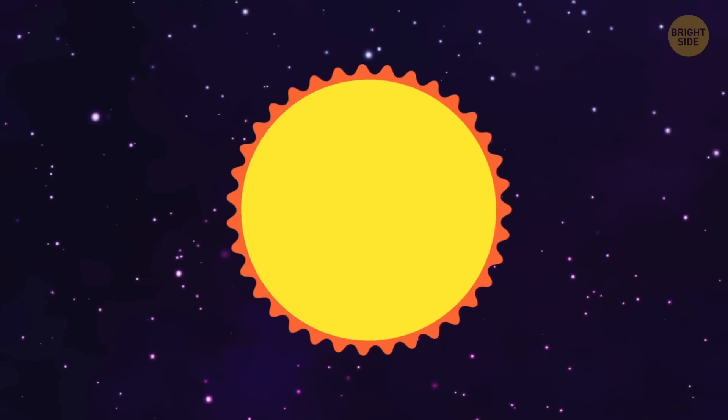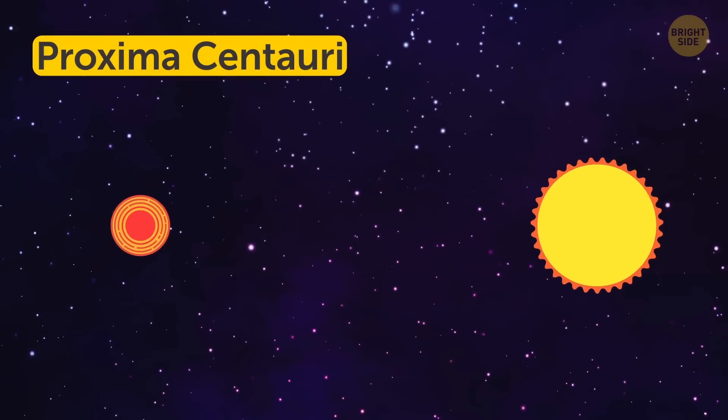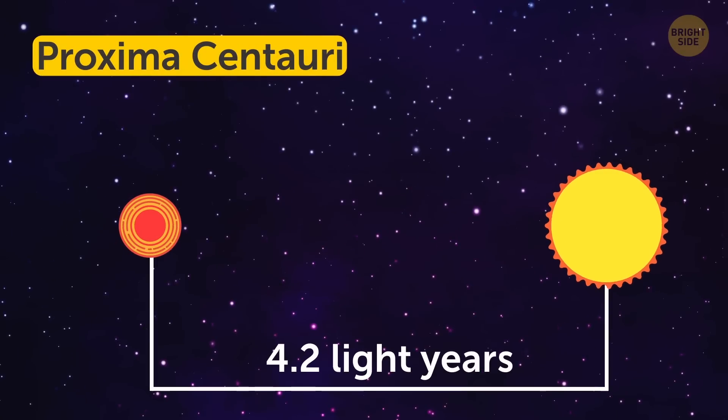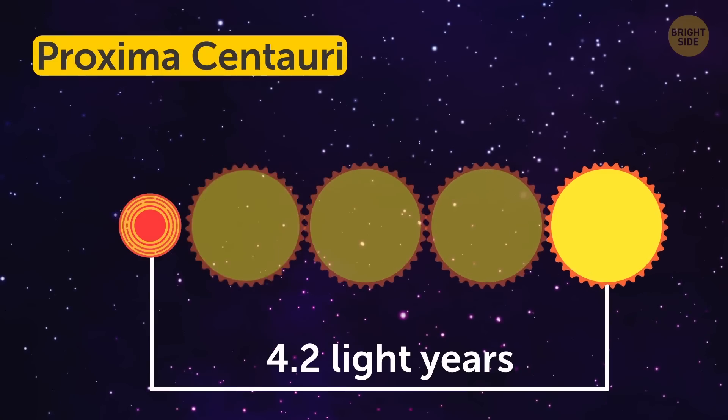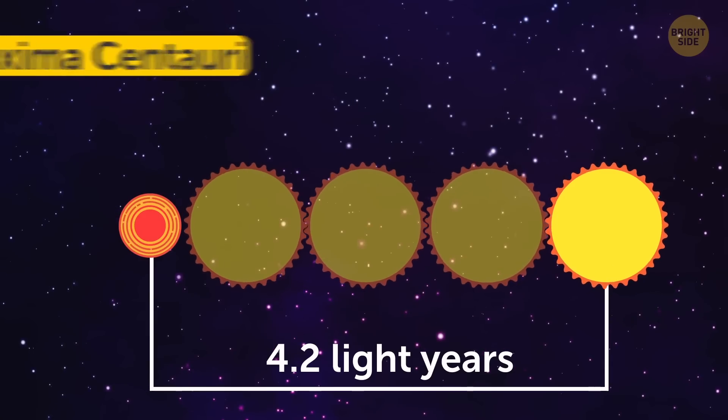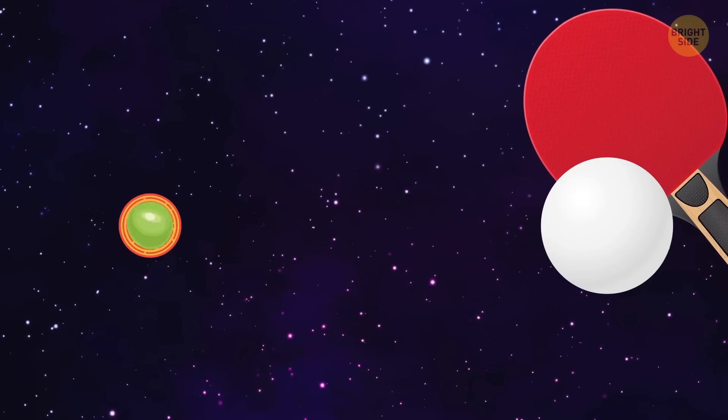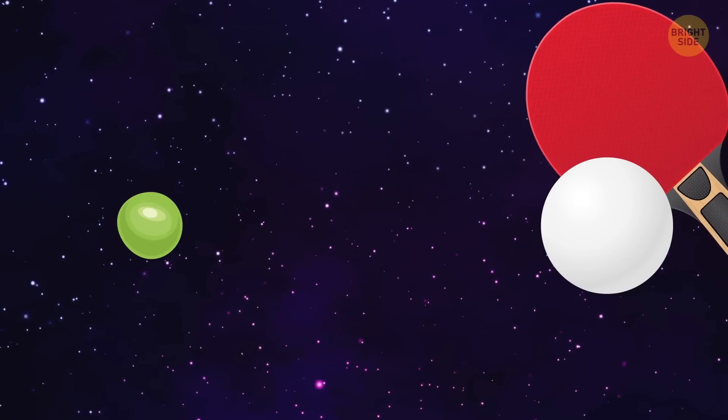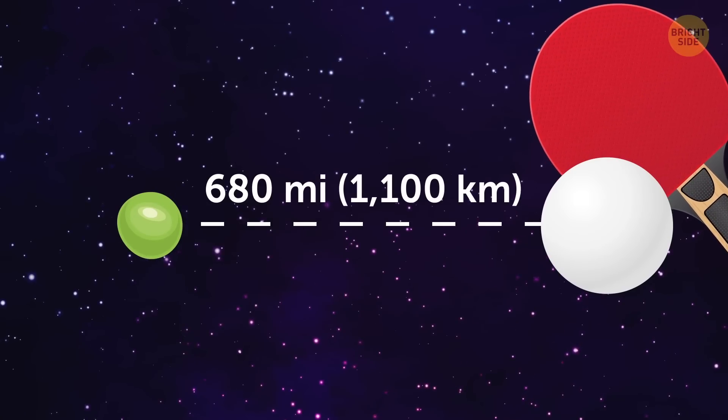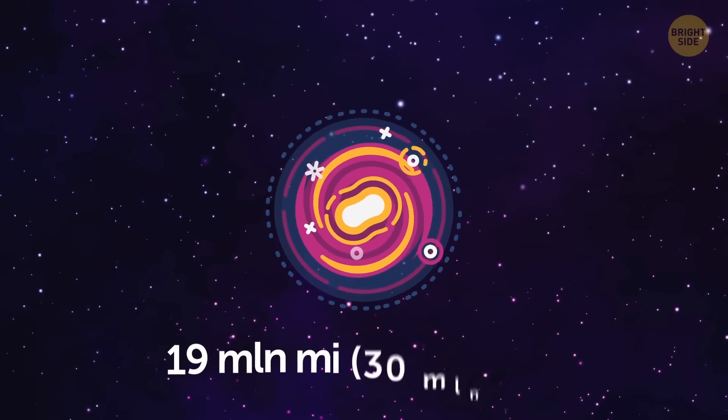For instance, the closest to our Sun star, Proxima Centauri, is more than 4.2 light-years away, which is about 30 million diameters of our Sun. In simpler terms, if the Sun were the size of a ping-pong ball, Proxima Centauri would be the size of a pea located 680 miles away. And the entire Milky Way would be 19 million miles wide.